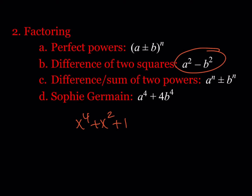Difference and sum of two powers — the most common ones are sum of cubes and difference of two cubes. The Sophie Germain identity is also interesting because in general, a^n + b^n is not factorable if n is even. But there are some exceptions; in the case of Sophie Germain, that expression is factorable.